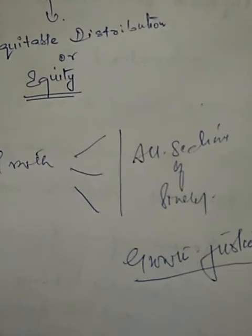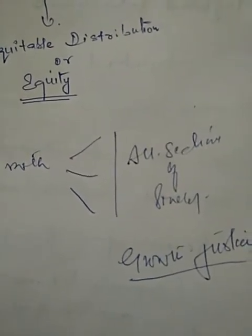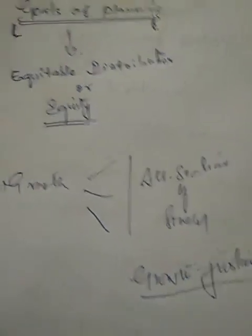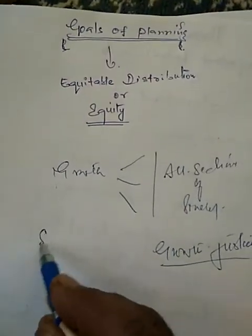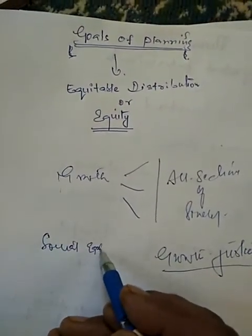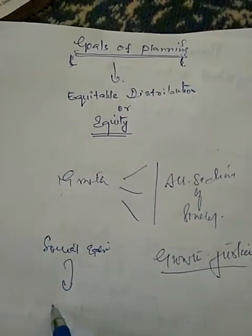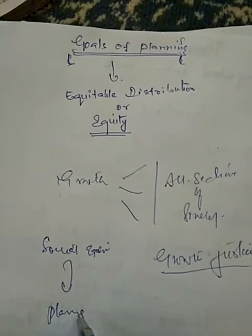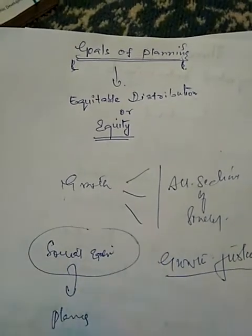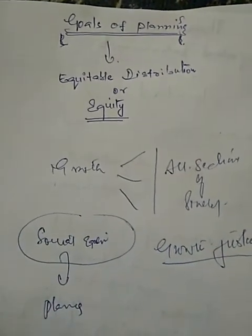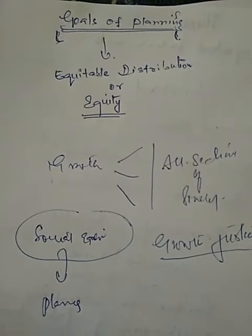Equitable distribution of income implies social equality. This is one of the principal objectives and goals of planning - social equality is the principal objective.